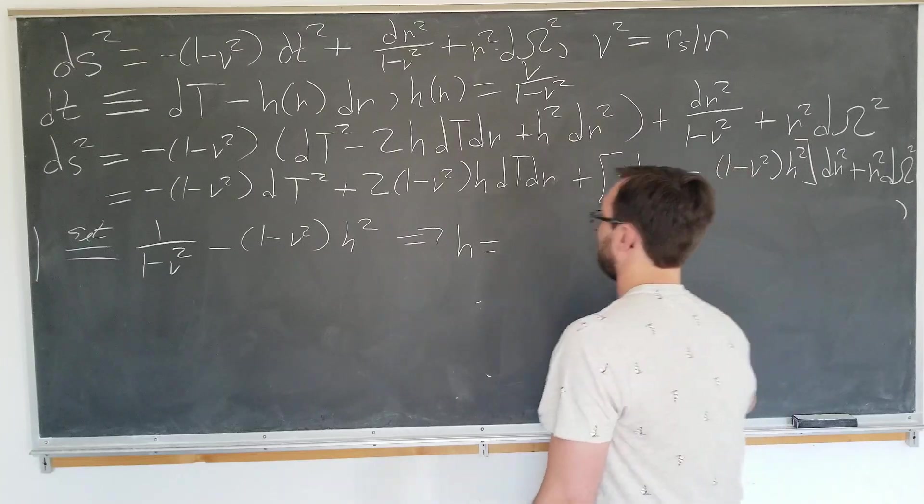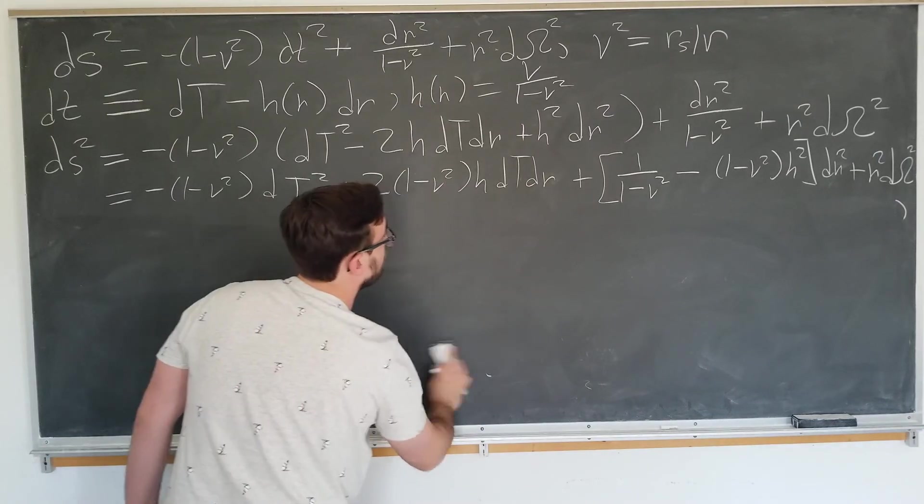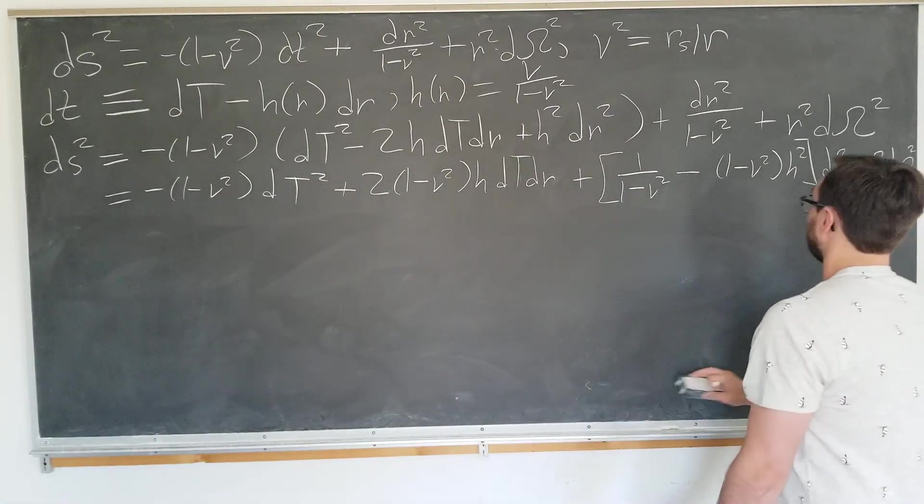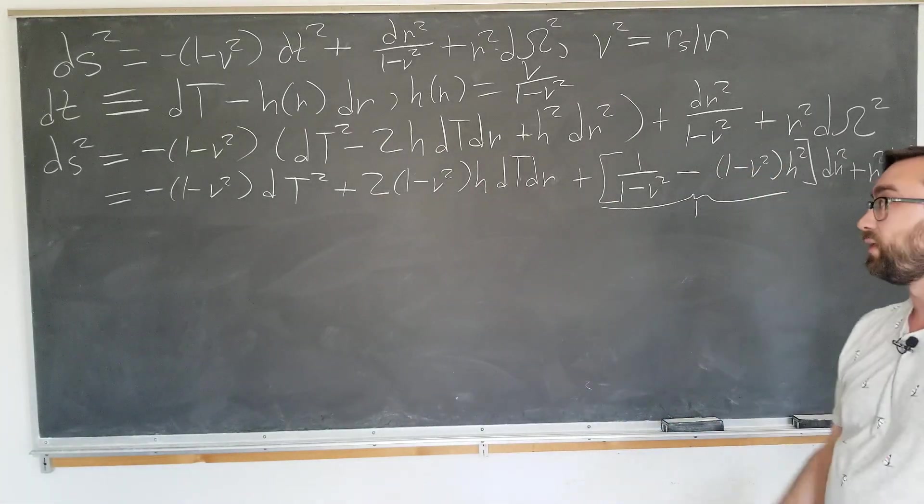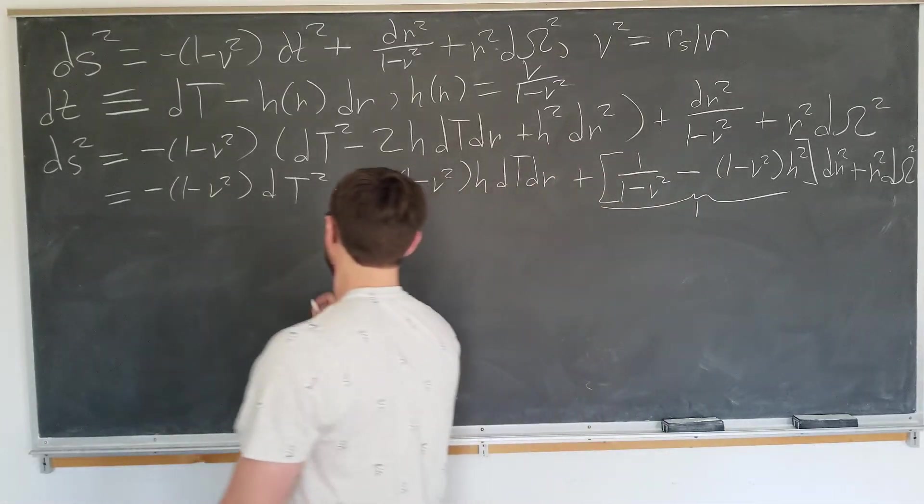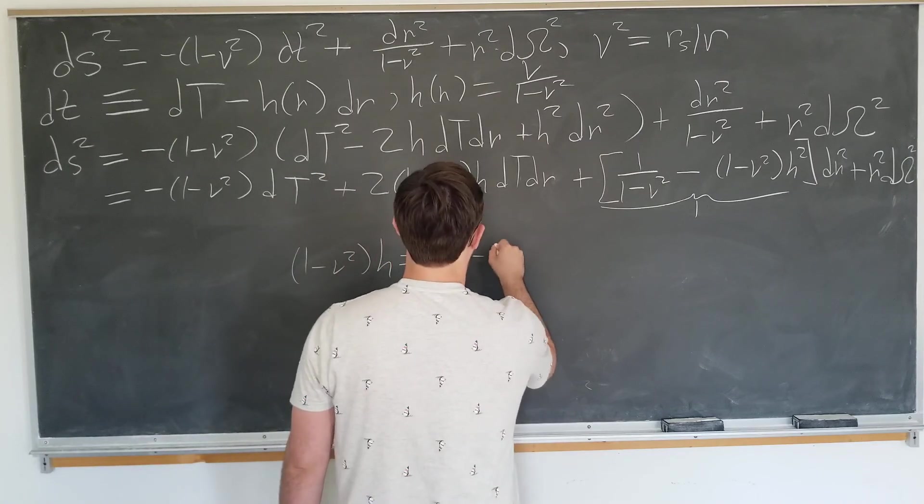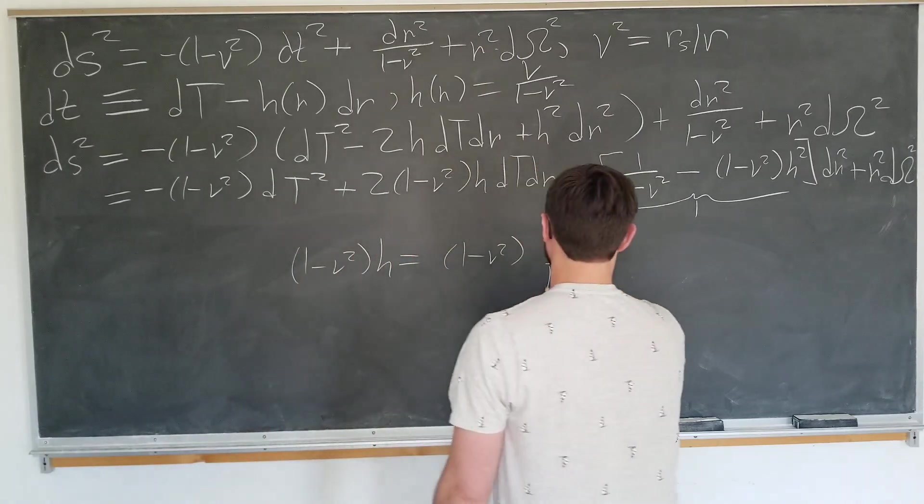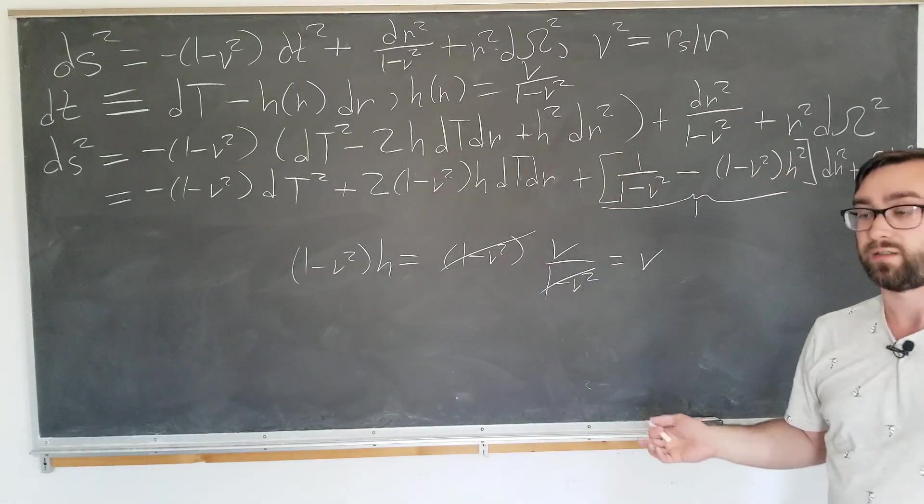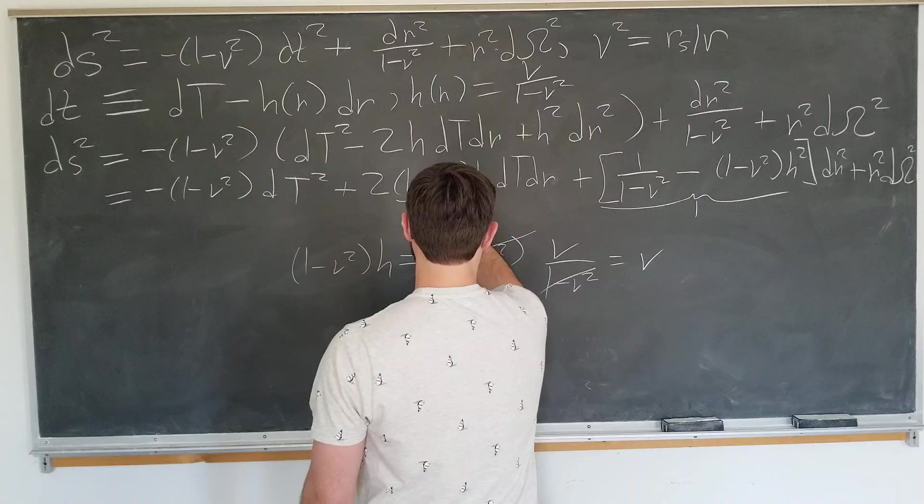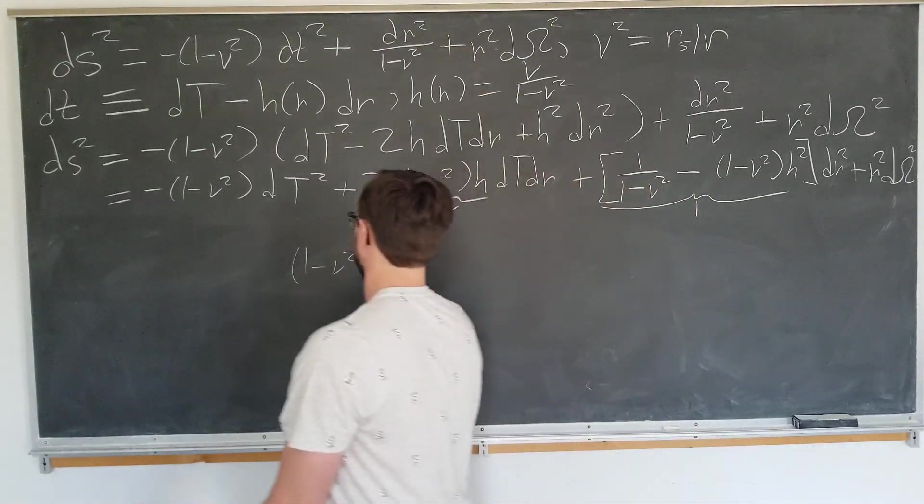Now we're just going to make some simplifications here. We see right off the bat that this term goes away because we just defined it to be 1. We're going to make a similar observation here. We note that 1 minus v squared h is just 1 minus v squared times v over 1 minus v squared. So this actually cancels. This is just v here. So that's pretty nice as well. Things are working out nicely with the choice of h.